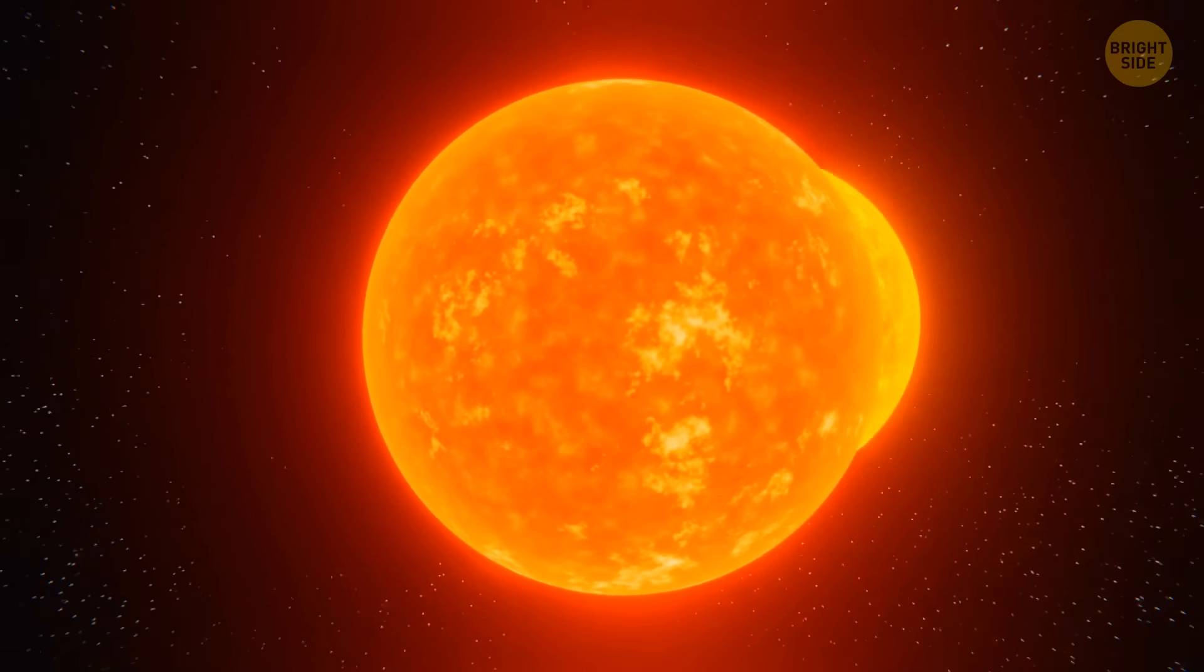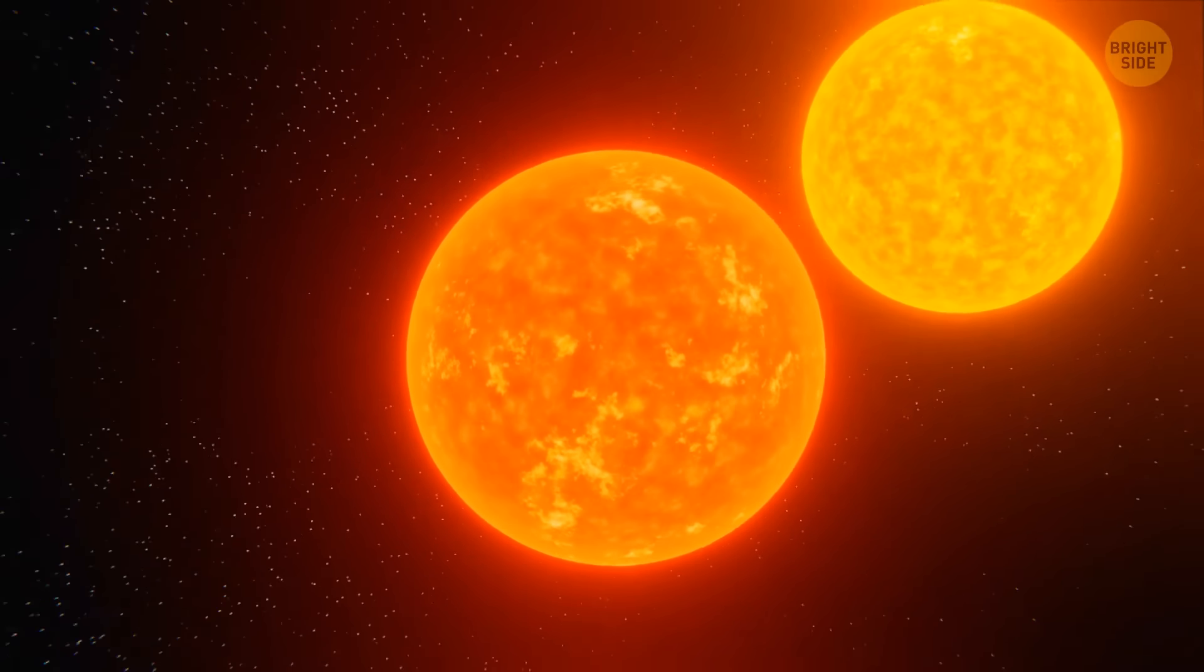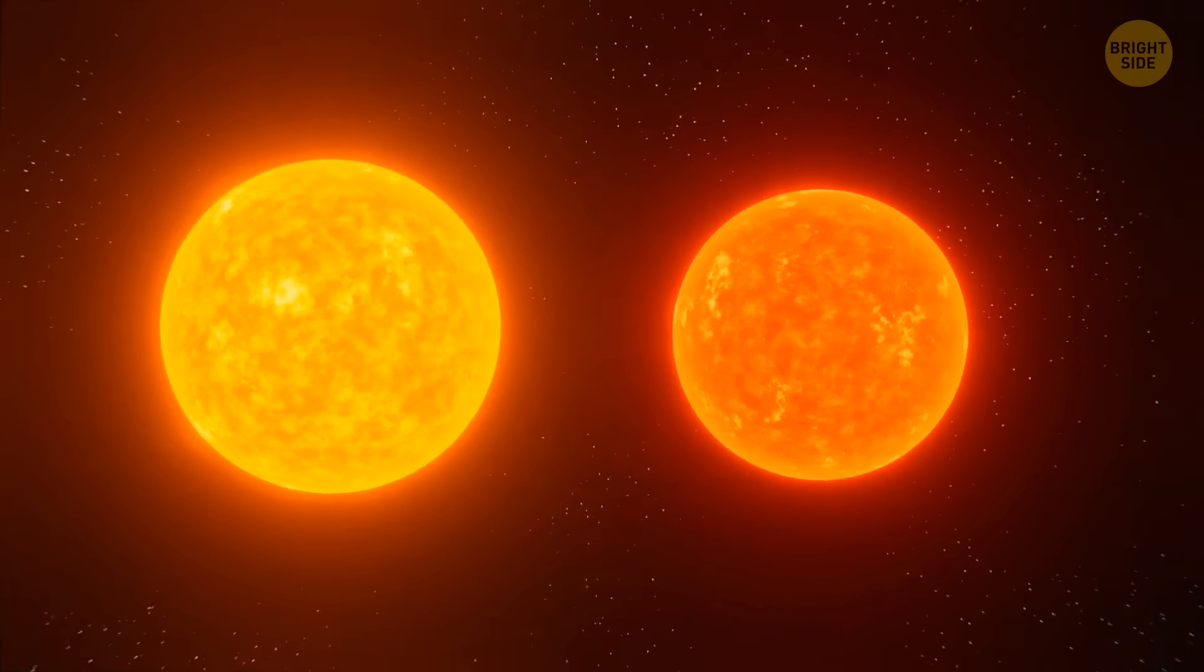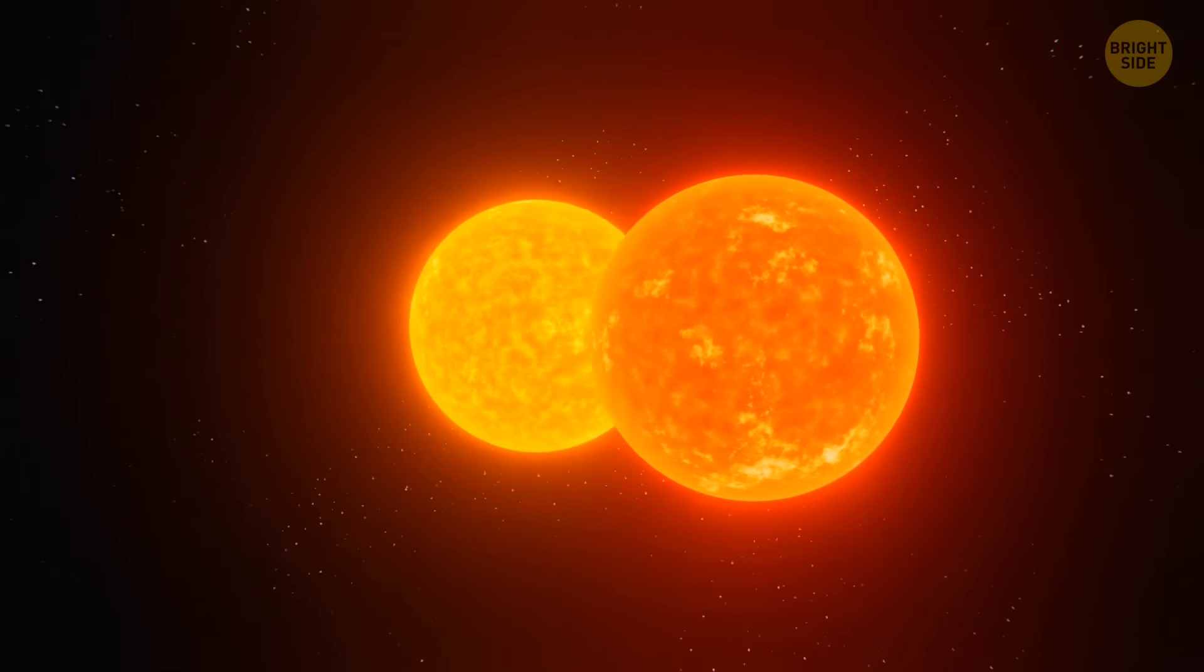However, it wasn't always like that. Once upon a time, the Sun had a twin, possibly an evil one. What happened to it? Well, let's find out.